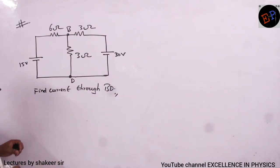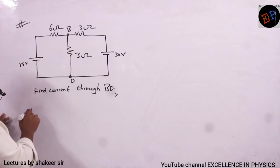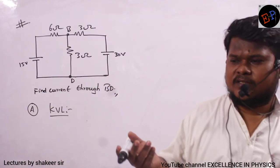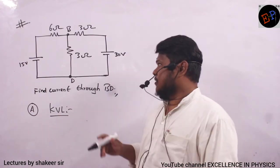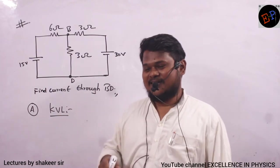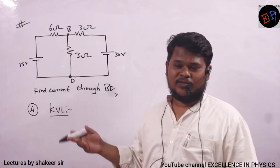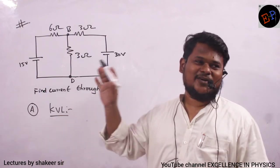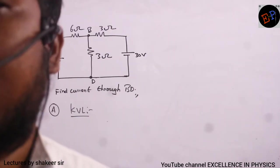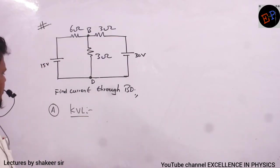Given circuit: find current through branch BD. We cannot determine which resistors are in series or parallel, no symmetry, not a Wheatstone bridge — so we apply KVL. There is no other option. We distribute current: total current I flows from the battery; at the junction it divides into I1 and I−I1. Two unknown quantities I and I1 require two equations.